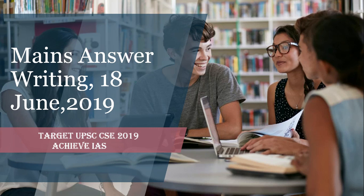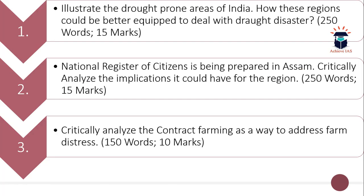In this mains answer writing series, we daily give you a certain number of questions, of which you have to write the answers and send them to us for evaluation. Today is 18 June. The first question is: illustrate the drought-prone areas of India and how these regions could be better equipped to deal with drought disaster. The word limit is 250 and the maximum marks are 15.